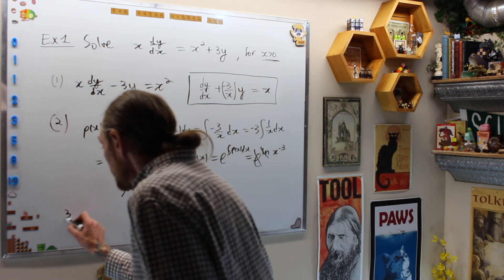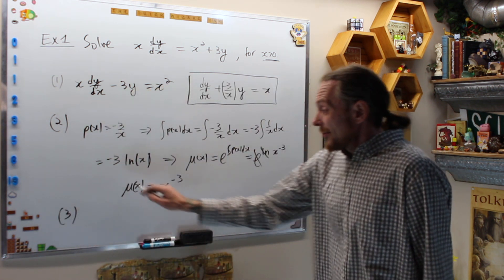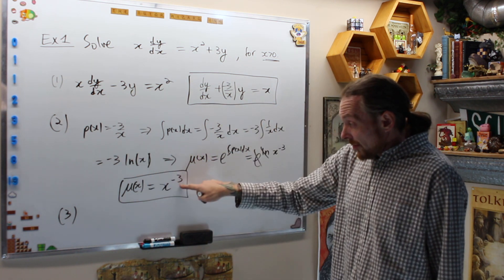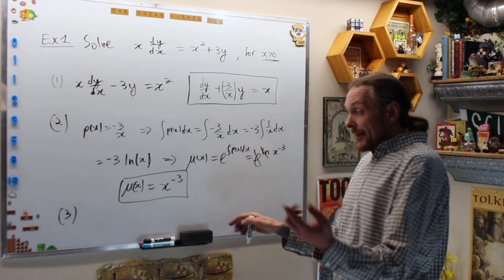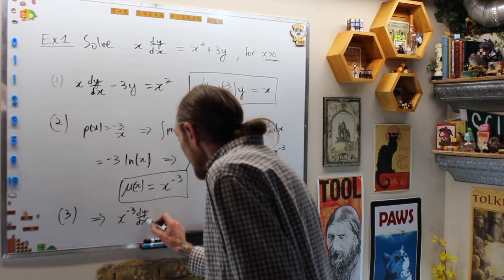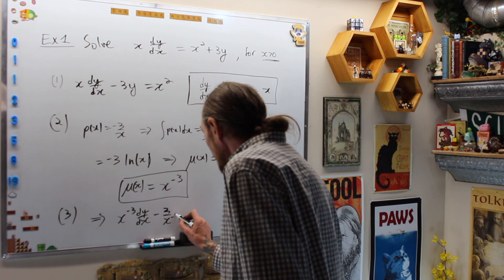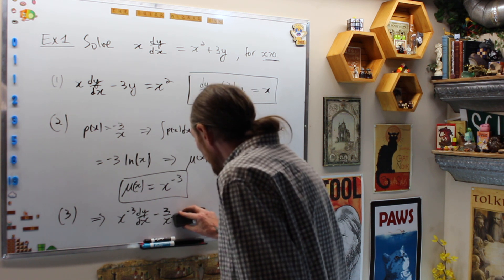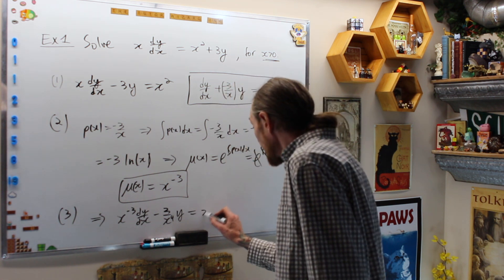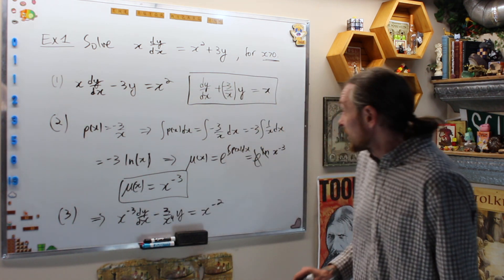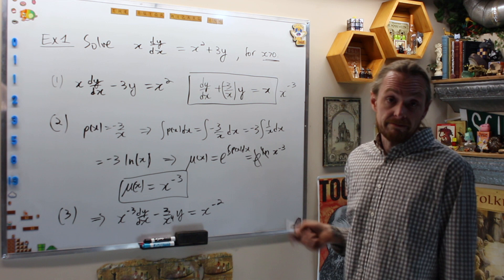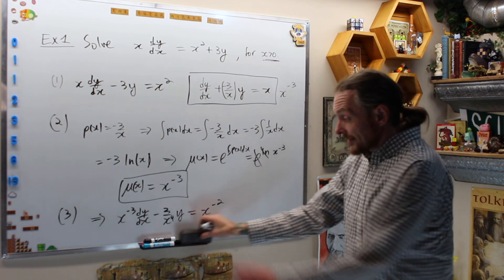Step 3: once I have the integrating factor and the standard form, I multiply the standard form on both sides by x to the negative 3. That gives me x to the negative 3 dy/dx minus 3 over x to the 4 times y equals x to the negative 2 on the other side. I've multiplied both sides by x to the negative 3 and distributed it onto each term.